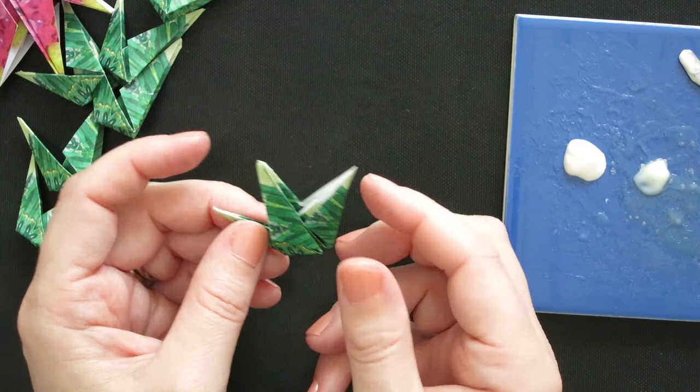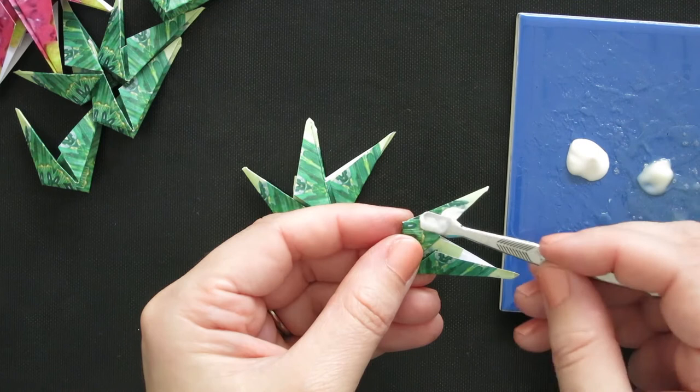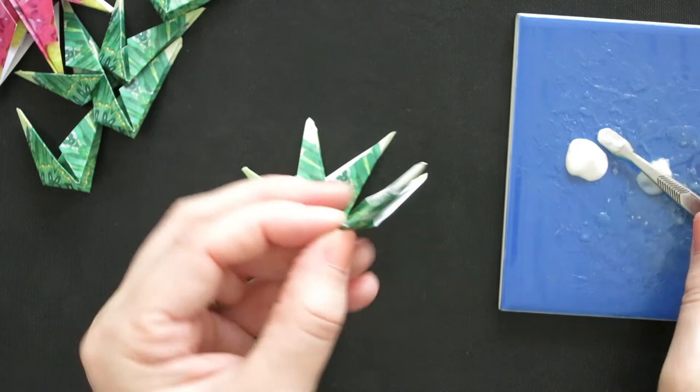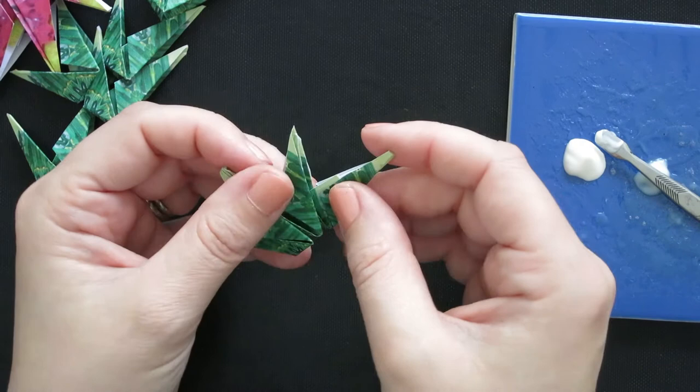Same thing—this bottom triangle is where you're going to be applying glue. A little goes a long way. And again, right into left, a little gap there, lining up this edge with this edge of your bottom triangle.